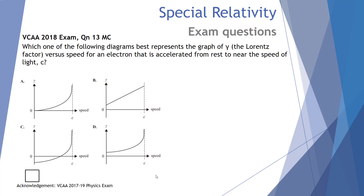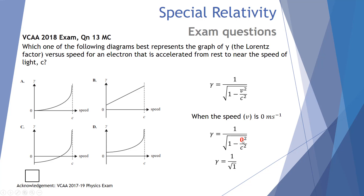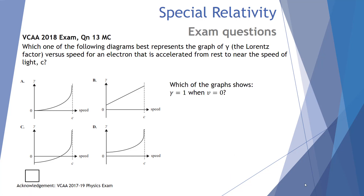The next question comes from 2018, question 13, multi-choice: which of the following diagrams best represents the value of gamma, the Lorentz factor, versus speed for an electron accelerated from rest near the speed of light? We've got four graphs, one of which is correct. Here's our equation for gamma — the Lorentz factor — equal to one over the square root of one minus the speed squared divided by the speed of light squared. When the speed of the object is zero, gamma equals one over root one, which is just one. So we check which graphs have a gamma of one when speed is zero.